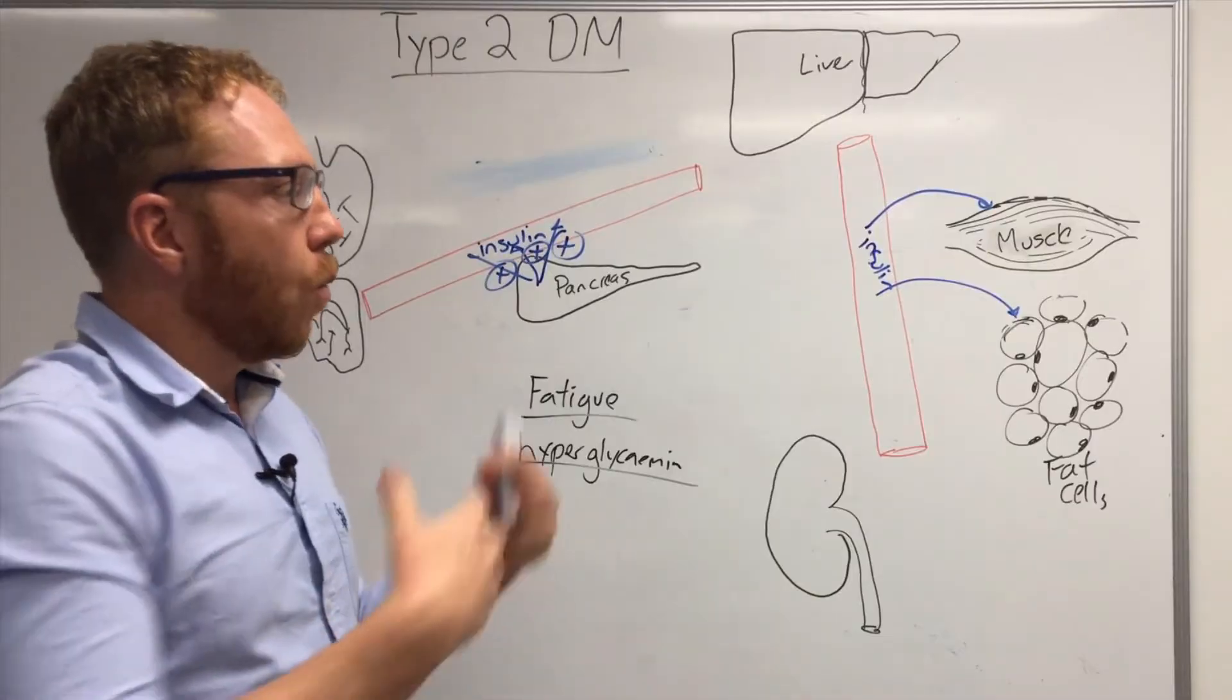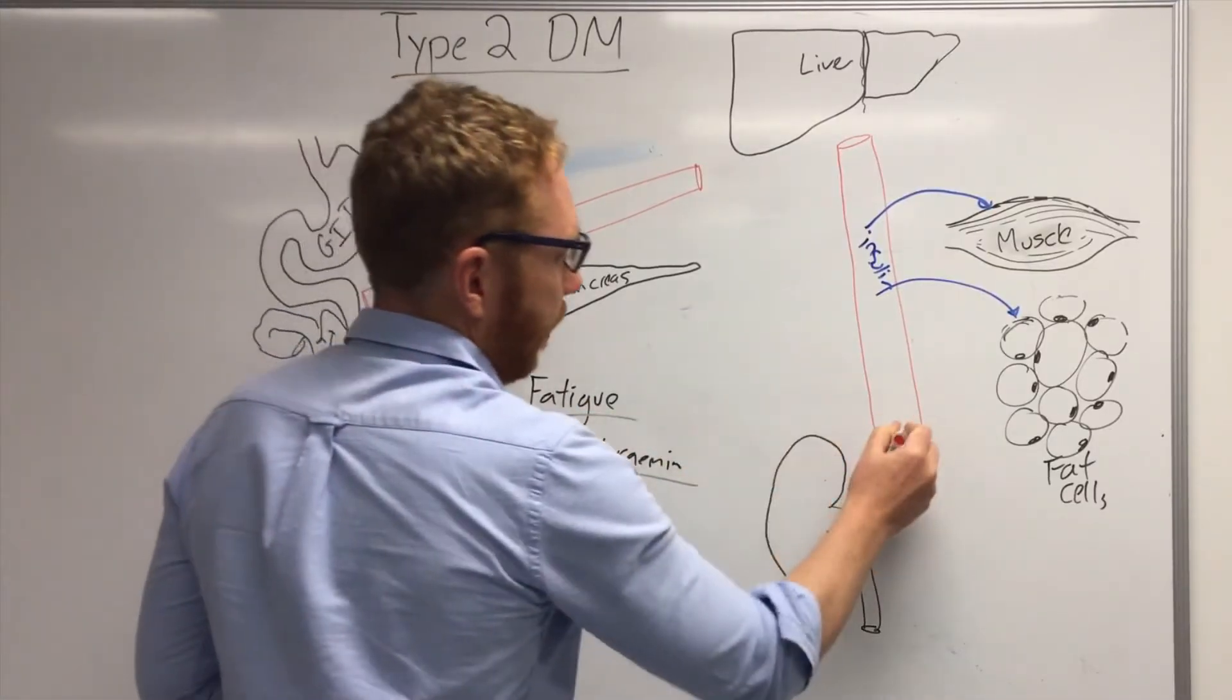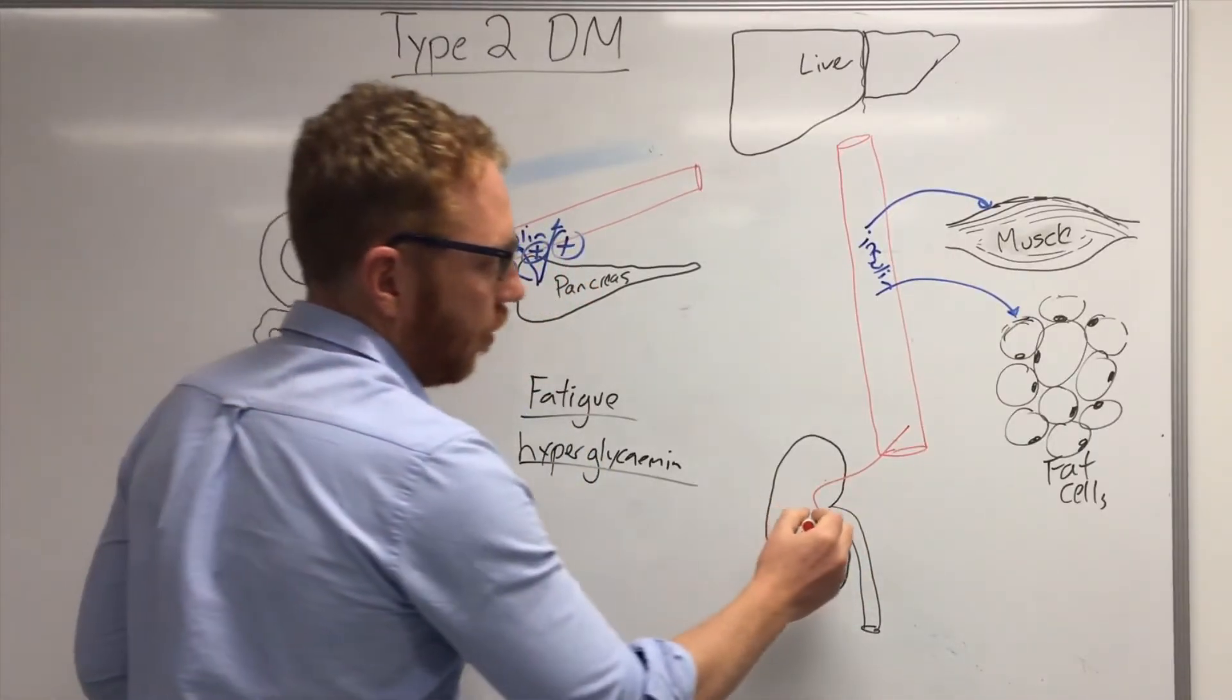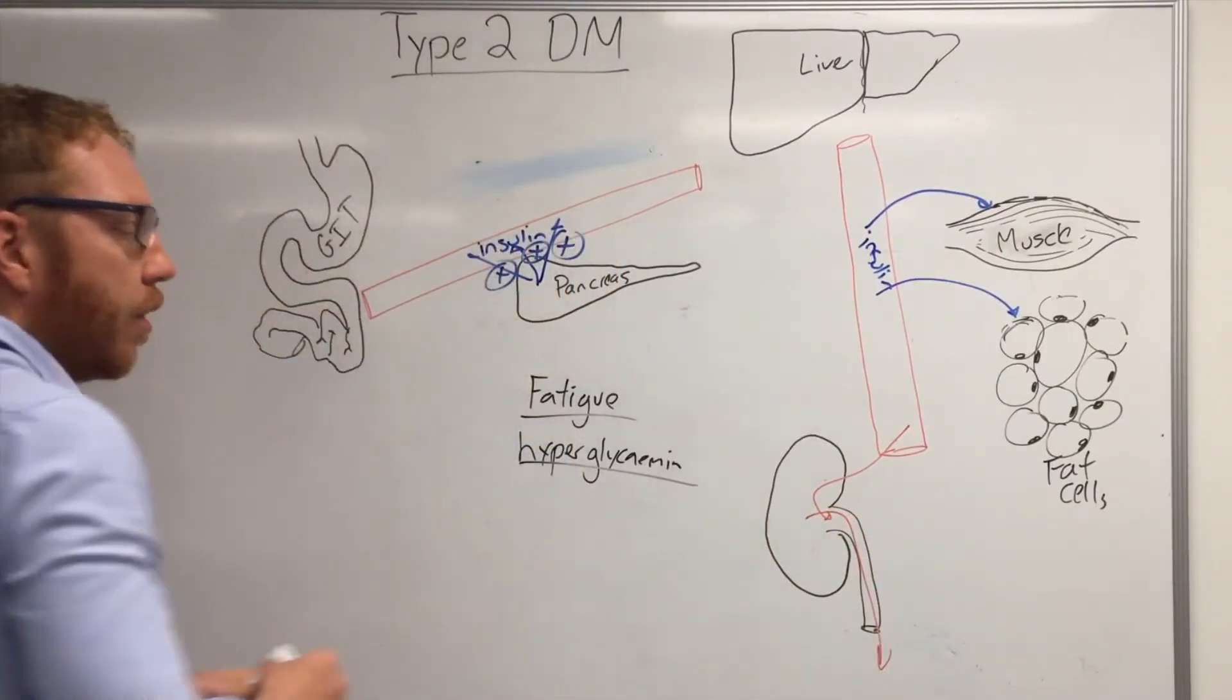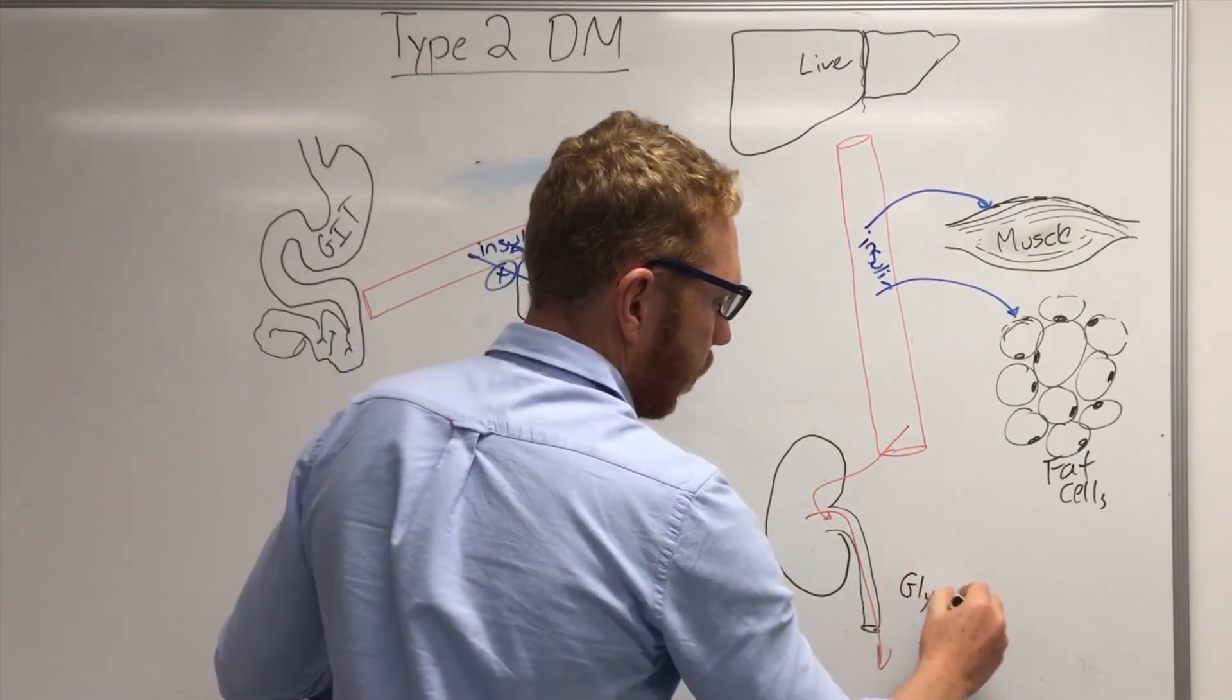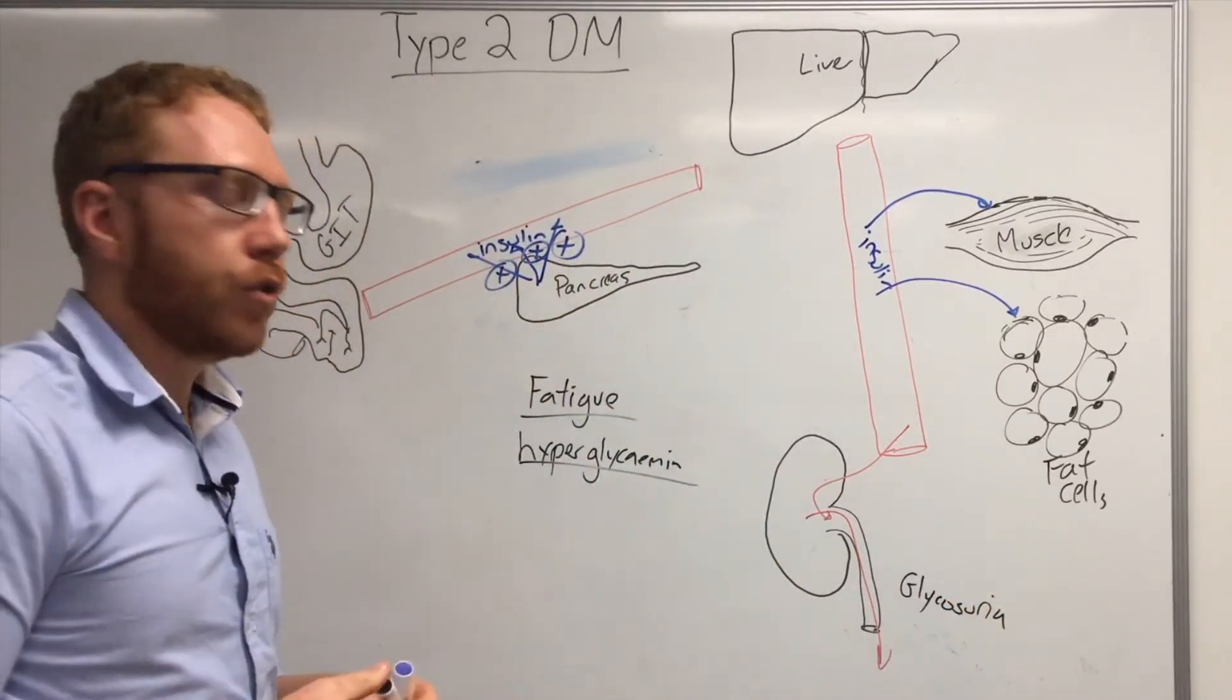Now what eventually will happen is that blood will be taken to the kidneys and the kidneys just can't handle this amount of sugar. And a lot of it will just pass through and go into the toilet. And so this is going to lead to another sign which we call glycosuria. Glycosuria is essentially just sugar in your urine.